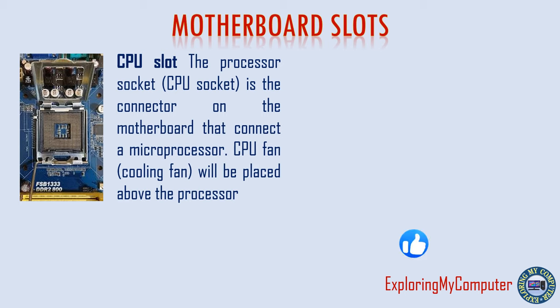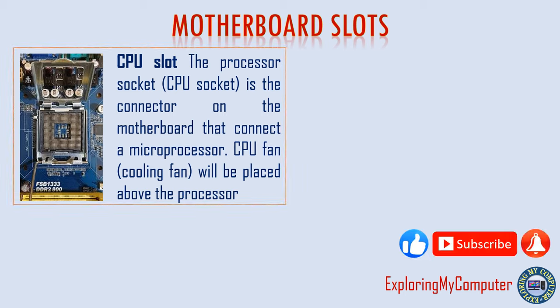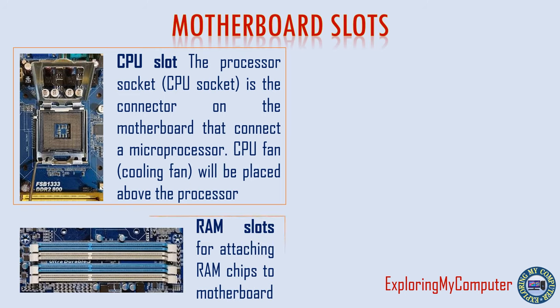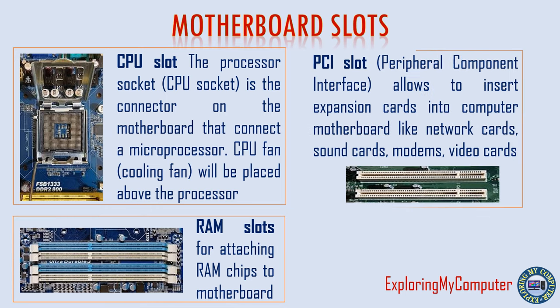The CPU slot (processor socket) is the connector on the motherboard that connects a microprocessor. A CPU fan is placed above the processor. RAM slots are for attaching RAM chips to the motherboard. PCI slot (Peripheral Component Interface) allows inserting expansion cards into the computer motherboard, such as network cards, sound cards, modems and video cards.